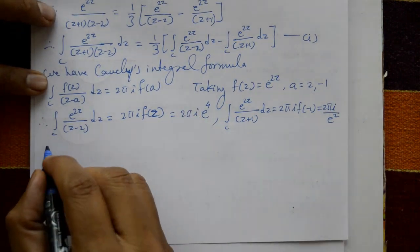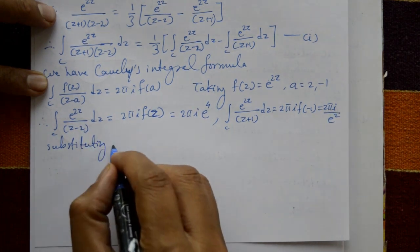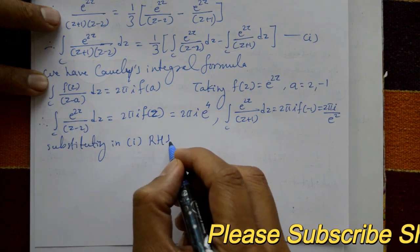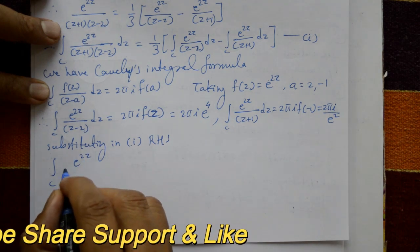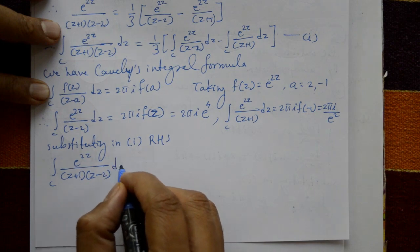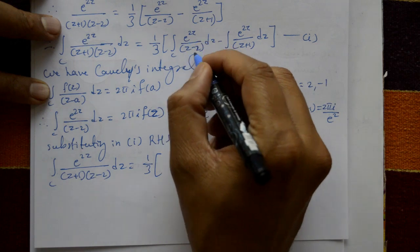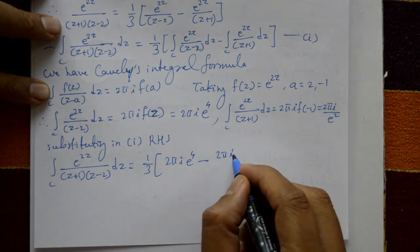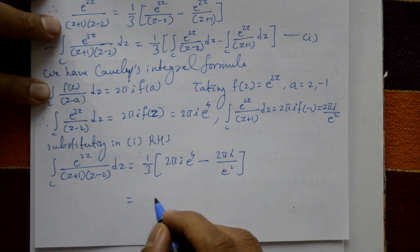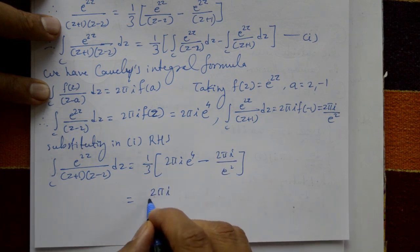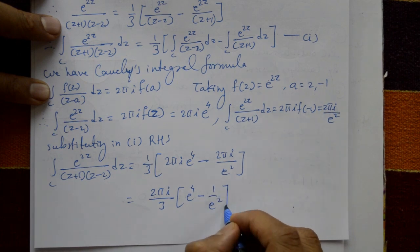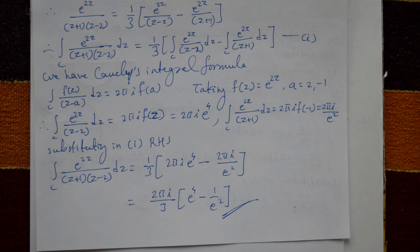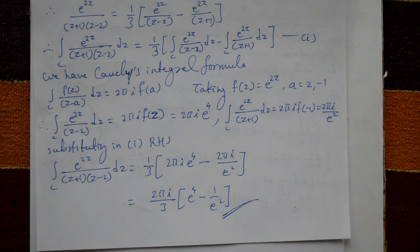Substituting these into equation number one: the integral of C of e^(2z)/[(z+1)(z-2)] dz = (1/3) · [2πi · e^4 minus 2πi/e²]. Factoring out 2πi gives the final answer: 2πi/3 · (e^4 - 1/e²). Thank you.